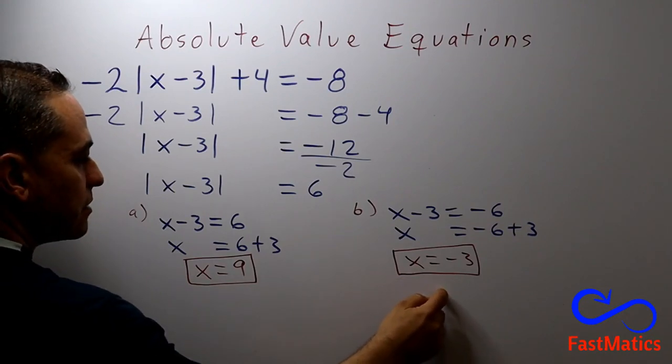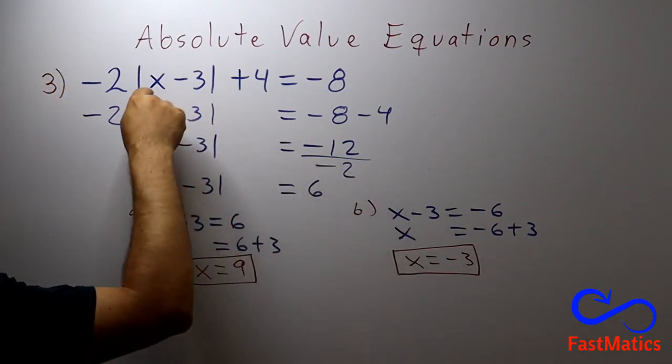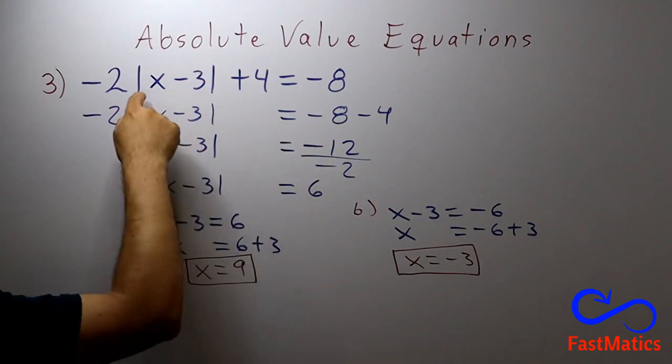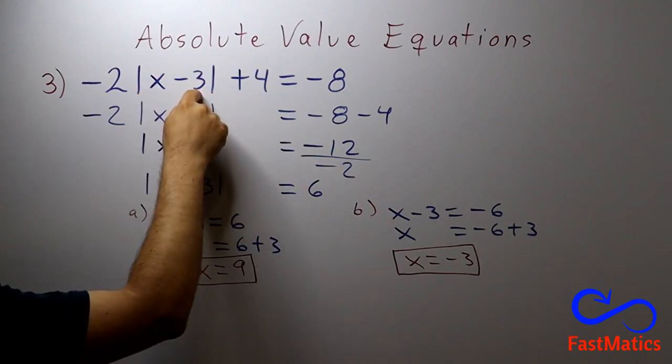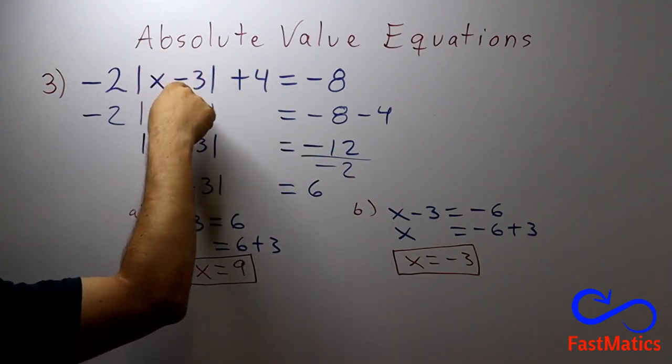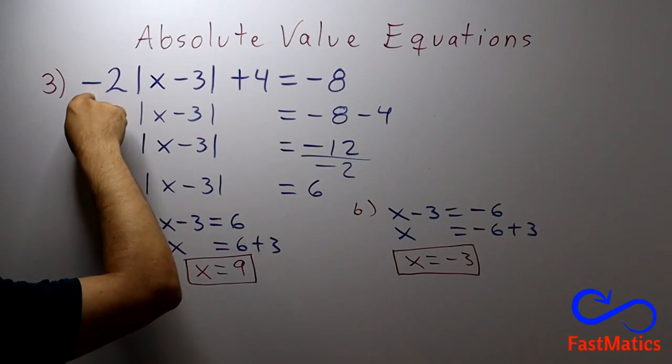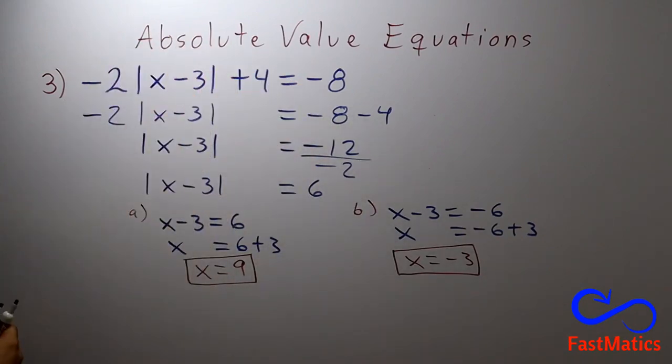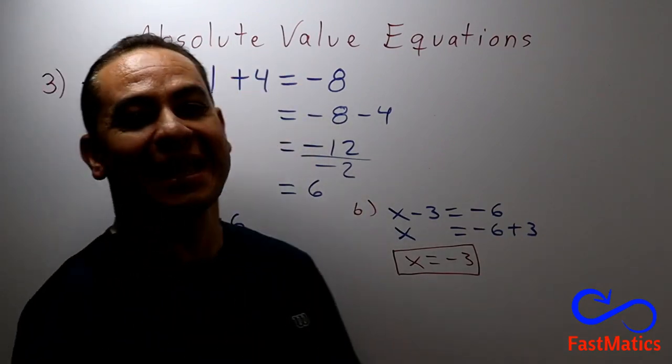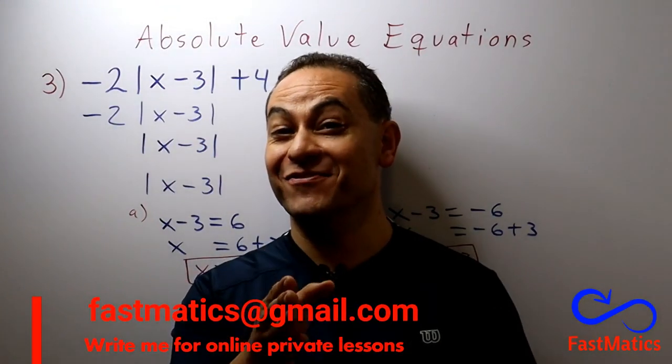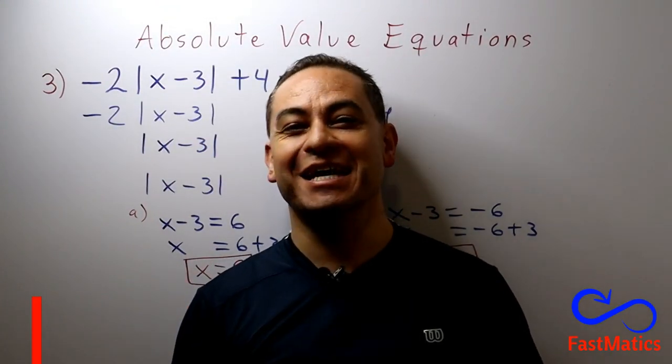And x is equal to negative 3. We replace the x with that. Negative 3 and negative 3 is negative 6. Absolute value is 6 times negative 2 is negative 12 plus 4 is negative 8. Thank you very much dear Fastmatics friends. See you next time.